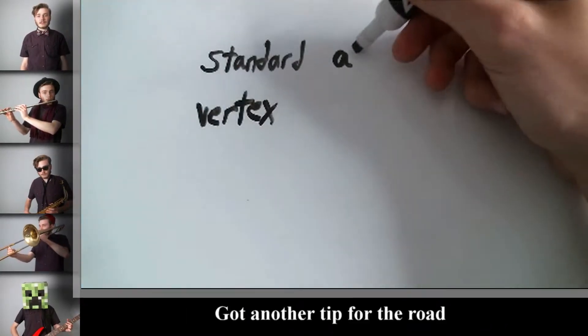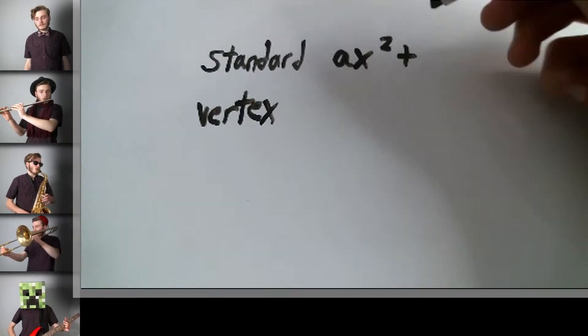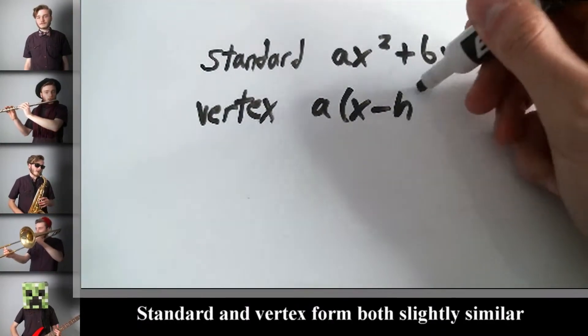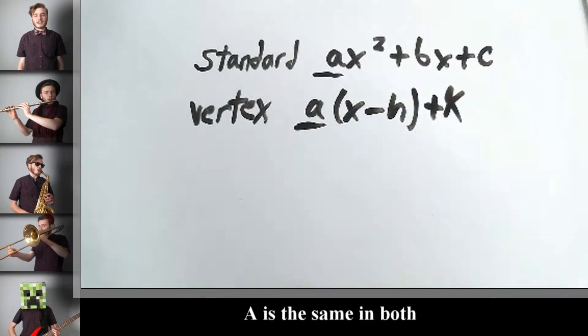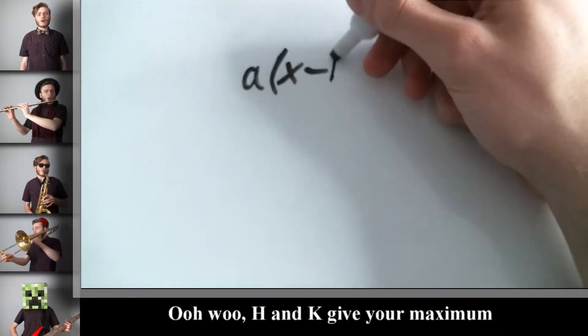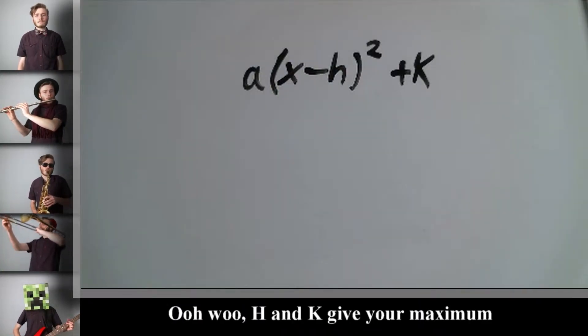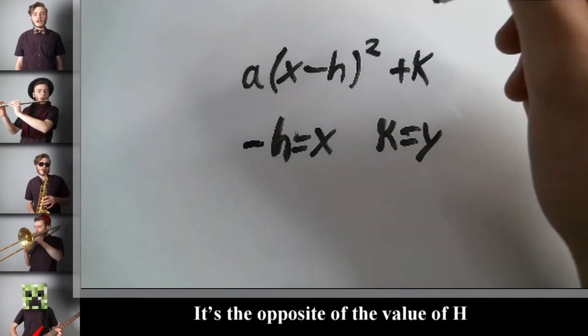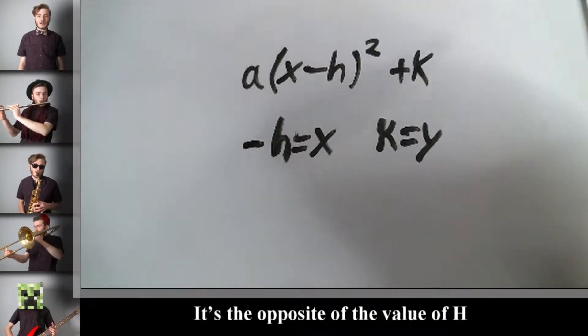Got another tip of the road. Standard and vertex form both slightly similar. A is the same in both. Now understand why they call it vertex form. h and k give you maximum. K is y but x has a different number. It's the opposite of the value of h.